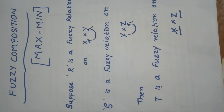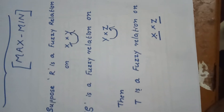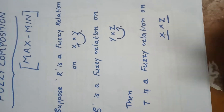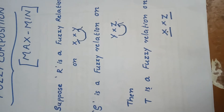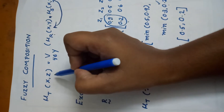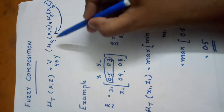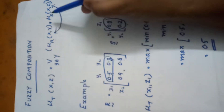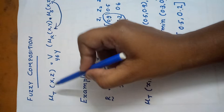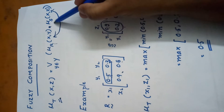Suppose R is a fuzzy relation on X cross Y and S is a fuzzy relation on Y cross Z. Then T, that is the fuzzy composition, is a fuzzy relation on X cross Z. It is represented by μT(x, z) = max over all y ∈ Y of [μR(x, y) composition μS(y, z)]. That is, T is the cross product of R and S.